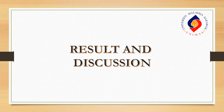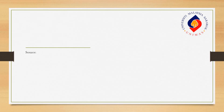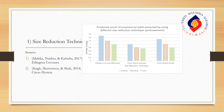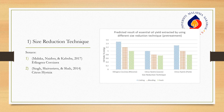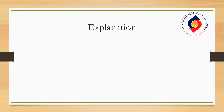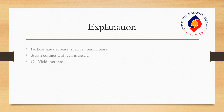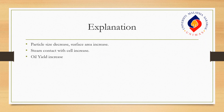For the results and discussion, the first objective covers the size reduction technique. Based on the graph showing the predicted results, cutting will produce the highest oil yield compared to blending and fresh samples. As particle size decreases, surface area increases, which allows the steam to have higher contact with the cell surface. Thus, more volatile compounds can be evaporated, hence increasing the oil yield. This statement is supported by several authors.